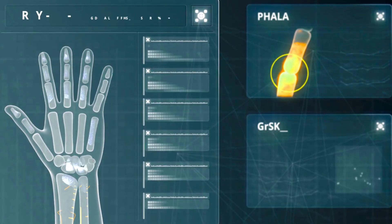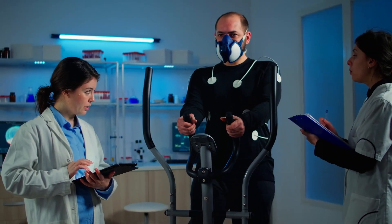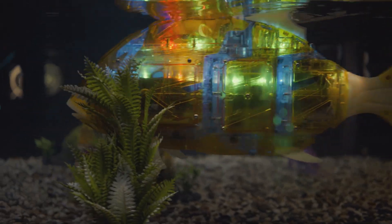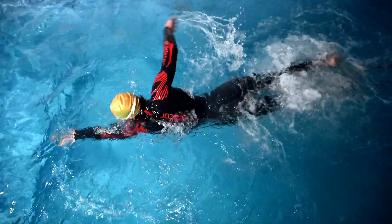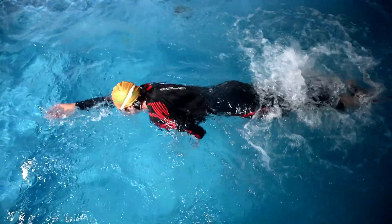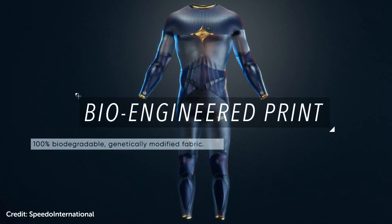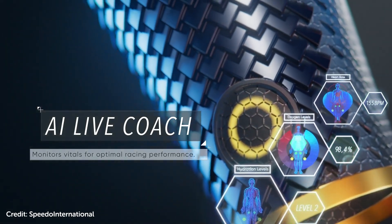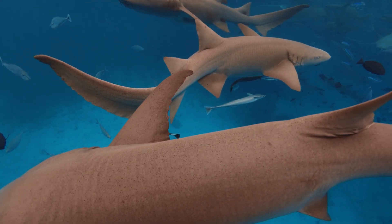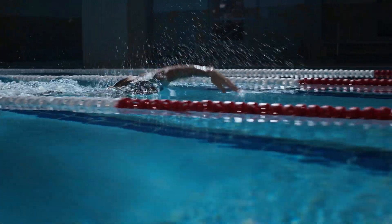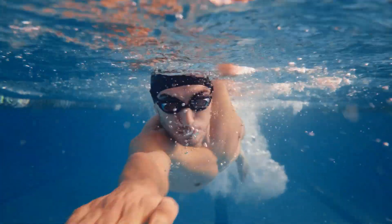Further study of fluid dynamics and human biomechanics could lead to even more efficient swimming techniques. Researchers at Bielefeld University have used robotic fish models to study efficient swimming motions, which could potentially be applied to human swimming. While full-body suits are banned, there may be other technological advancements in swimwear or pool design that could reduce drag. Speedo is developing swimsuits with built-in sensors to track performance metrics, while some researchers are exploring swimwear materials inspired by shark skin to reduce drag further.